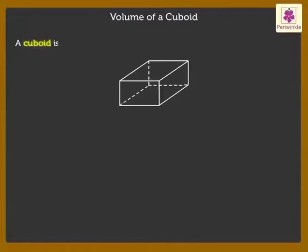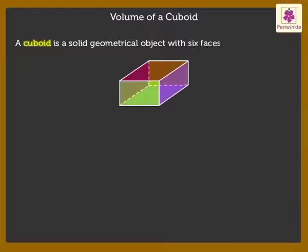A cuboid is a solid geometrical object with six faces. Each face of a cuboid is a rectangle.